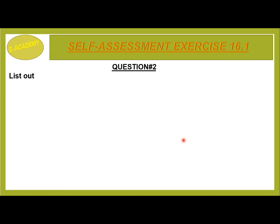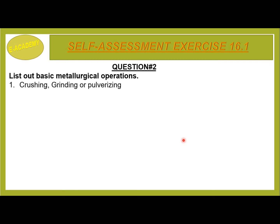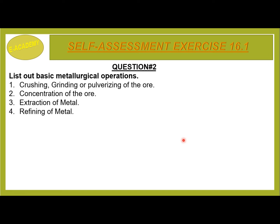Question No. 2: List out basic metallurgical operations. No. 1 is crushing, grinding or pulverizing of the ore. No. 2 is concentration of the ore. No. 3 is extraction of metal. No. 4 is refining of metal.